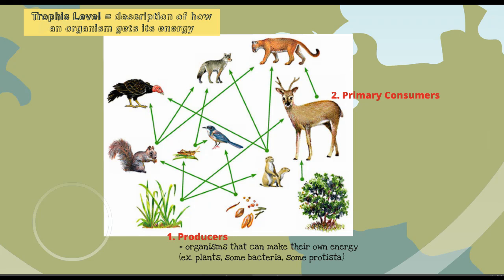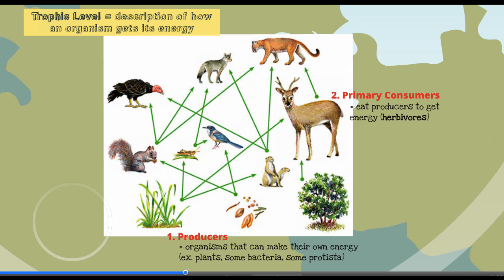The second trophic level are the primary consumers, and these are the organisms that eat producers to get their energy. We have another word for primary consumers, and those are herbivores. Our deer is a nice example of an herbivore when it eats the grass.